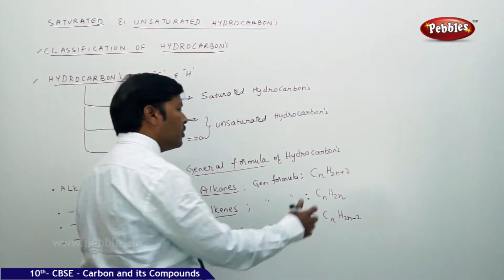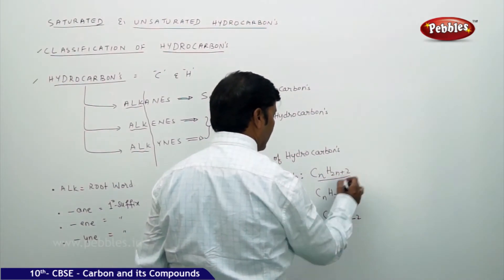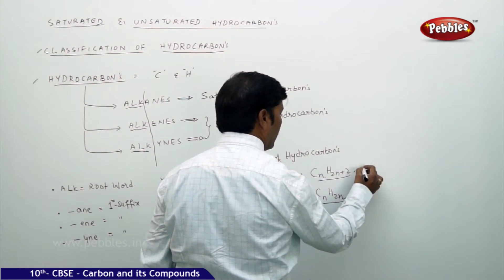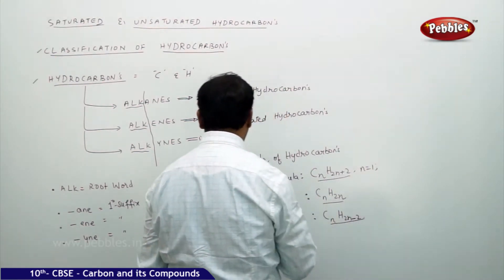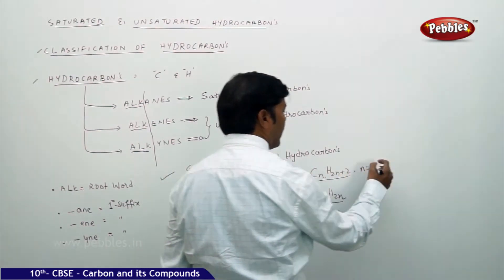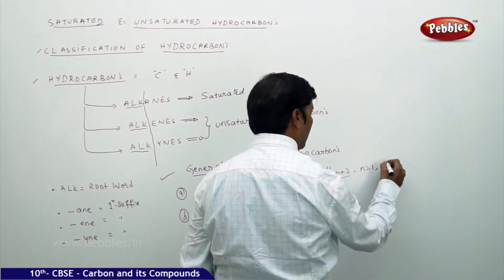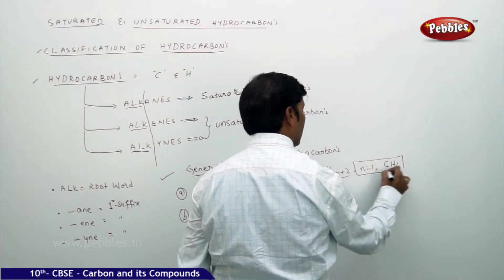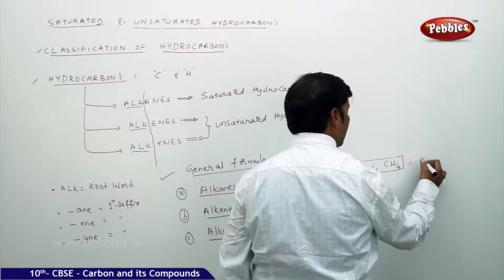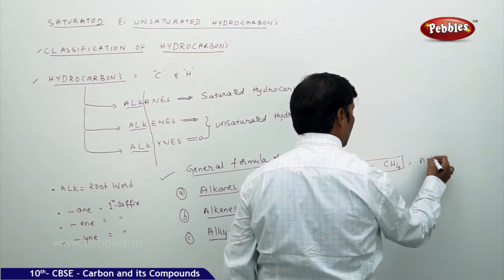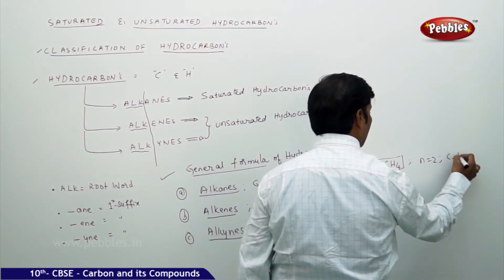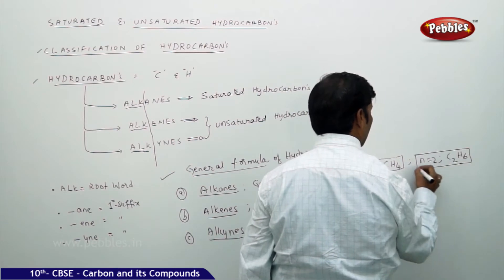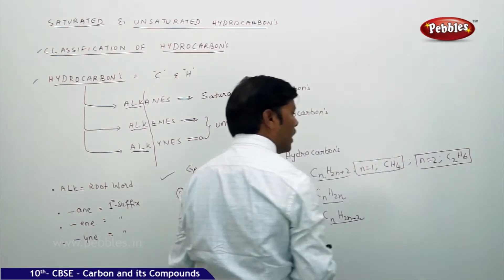If we substitute n = 1 into the alkane formula, we get the simplest alkane CH₄ (methane). For n = 2, we get C₂H₆, which is ethane, and so on.